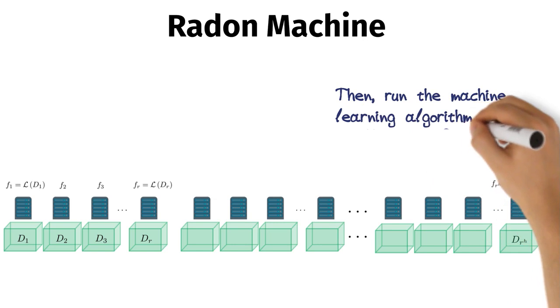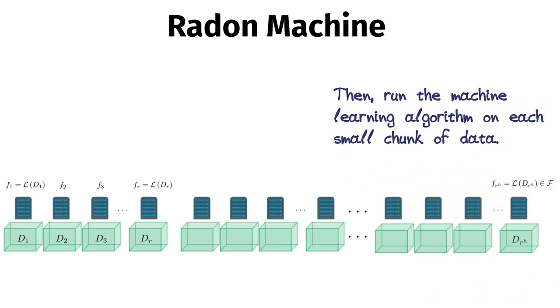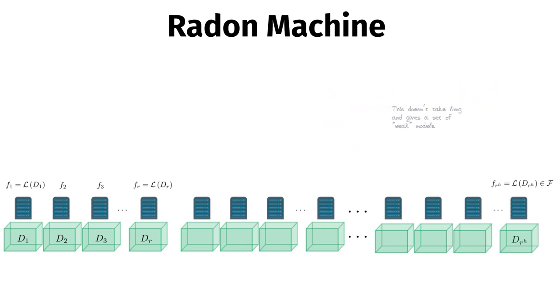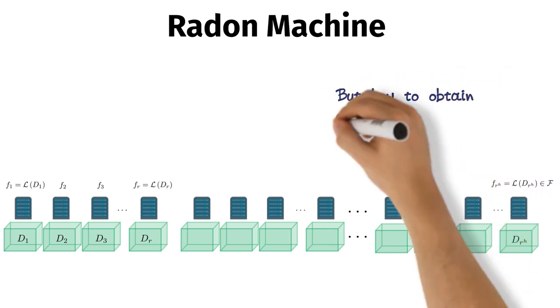Then run the machine learning algorithm on each small chunk of data. This doesn't take long and gives a set of weak models. But how to obtain a strong model?